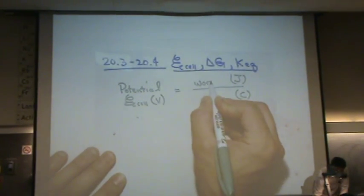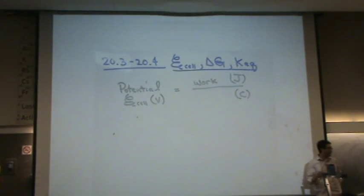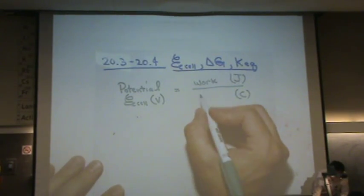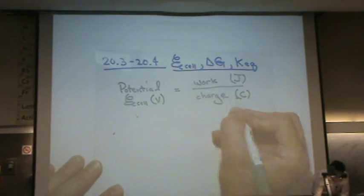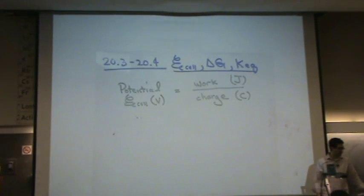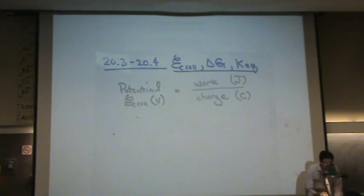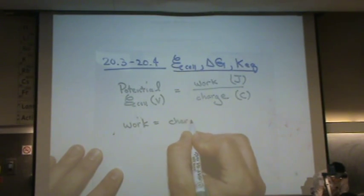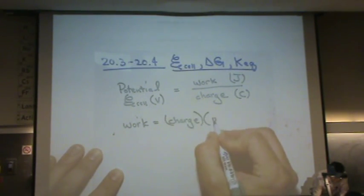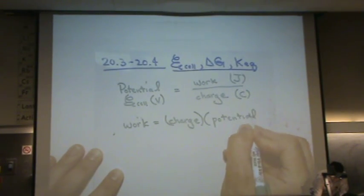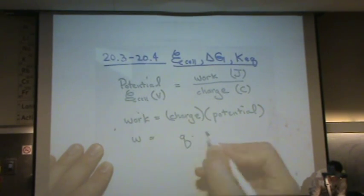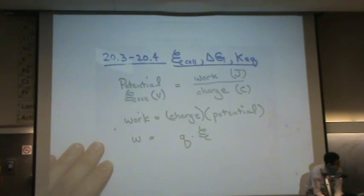It turns out that's defined as work. Remember work from 2b — it's the stored energy that can do work. This is per charge unit; a coulomb is a charge unit. So if I write that out another way: work equals charge times potential, or W equals Q times E, where E is the potential.